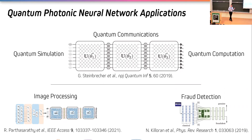Even outside of the quantum regime they have potential applications in image processing and things as abstract as fraud detection. However, there is one caveat: all of these proposed applications have been proposed assuming that the networks are operating ideally. I was fascinated by the idea of these networks and all their potential applications, but I wanted to know if this was all too good to be true, or if we can take something realistic from this.